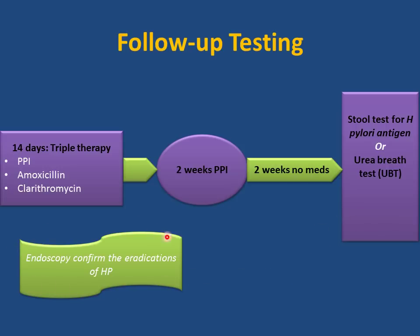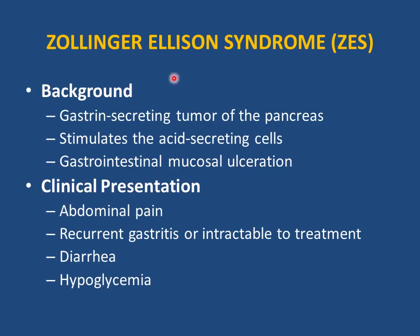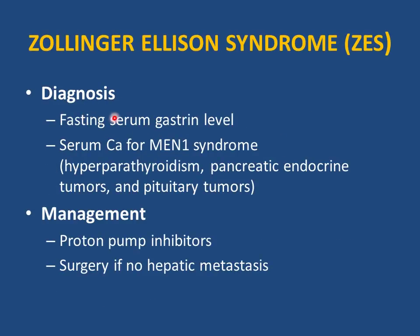Zollinger-Ellison syndrome is a rare cause of recurrent and persistent peptic ulcer disease caused by a gastrin-secreting tumor of the pancreas that stimulates acid-secreting cells. Clinical presentation includes abdominal pain, recurrent gastritis intractable to treatment, diarrhea, and hypoglycemia. Diagnosis is fasting serum gastrin level (will be very high) and serum calcium to rule out MEN syndrome (hyperparathyroidism, pancreatic endocrine tumor, pituitary tumor). Management: PPI and surgery if no hepatic metastasis.